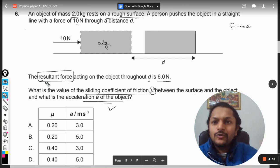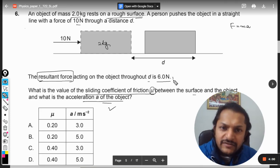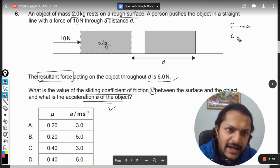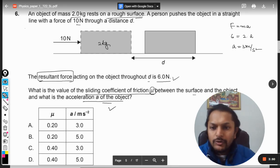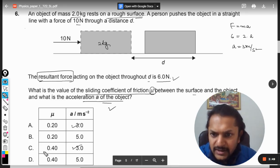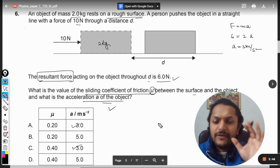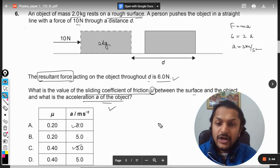Resultant force is given as 6, and mass is given as 2, so acceleration is definitely 3 meter per second squared. There is no doubt about it. So first option, we are clear about the acceleration now.